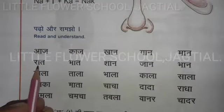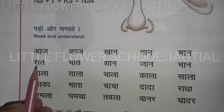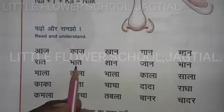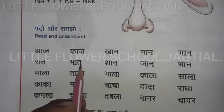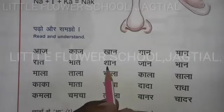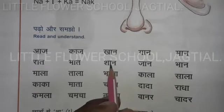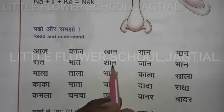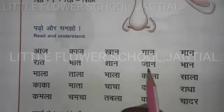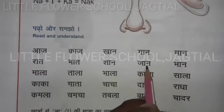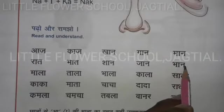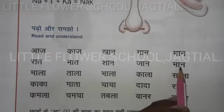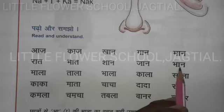Raat: ra, plus aa matra, ra, place ta equals raat. Bhaat: bha plus aa matra, bha plus ta equals bhaat. Shaan: sha plus aa matra, sha plus na equals shaan. Jaan: ja plus aa matra, ja plus na equals jaan. Bhaan: bha plus aa matra, bha plus na equals bhaan.